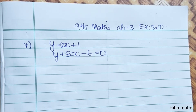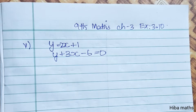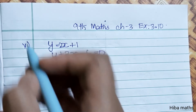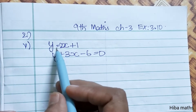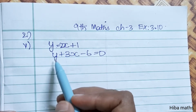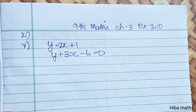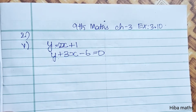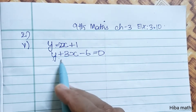Hello students, welcome to Hibamax 9th Standard Max Chapter 3, XS3.10. Let's look at the fifth sub-question in the second question. y is equal to 2x plus 1, and y plus 3x minus 6 is equal to 0. Let's take two lines.